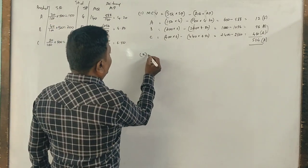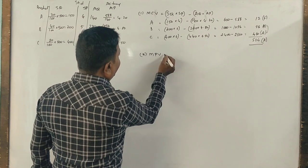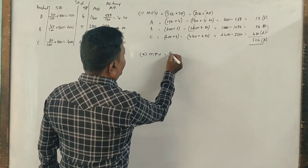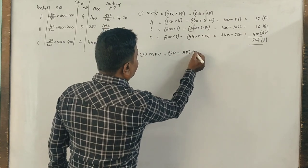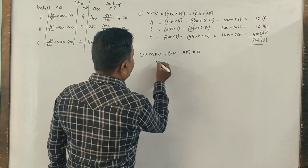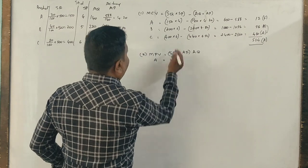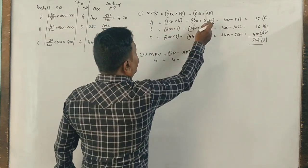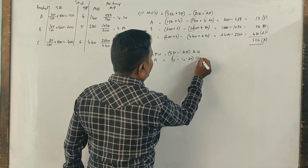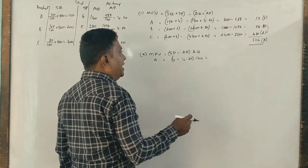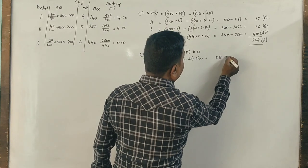Now what's the next one we want? Material price variance. Standard price minus actual price into actual quantity. Product A: standard price is 4, actual is 4.2, actual quantity is 140. 140 into 0.2 is 28 adverse.